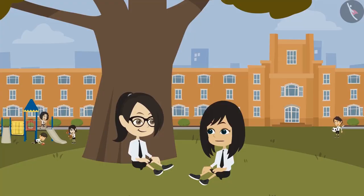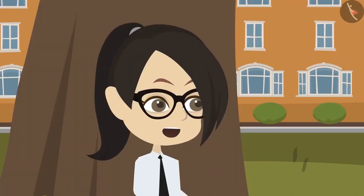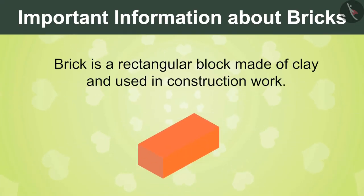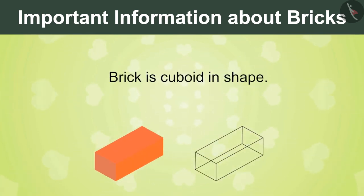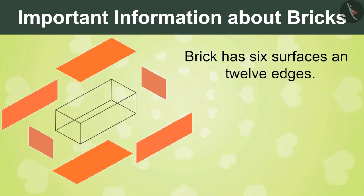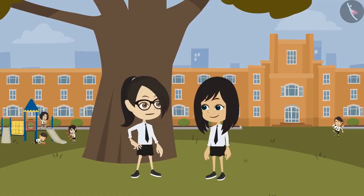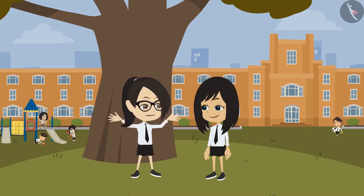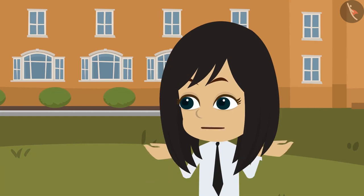Even after knowing the shapes, measurement, and how bricks are made, we have not yet been able to make beautiful designs with bricks. Someday let us make beautiful designs with bricks. Neha, I know all the information about bricks now. Bricks are made by baking clay and are used for construction work. A brick is in the shape of a cuboid with 6 surfaces and 12 edges, and all the edges and surfaces are straight. But I think the real fun would be to make something with them. Vandana, where can I learn more about the uses of bricks? I would like to know more.